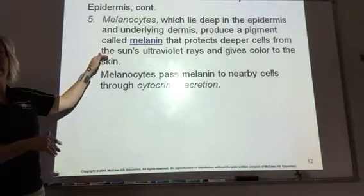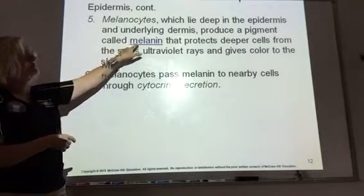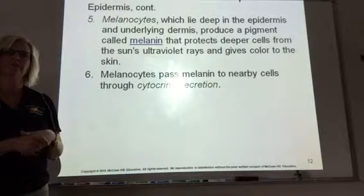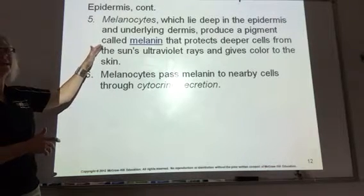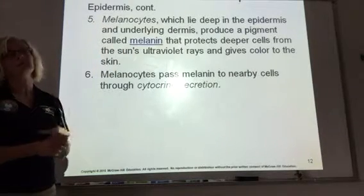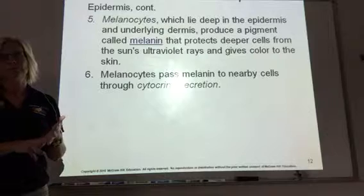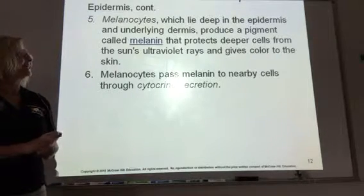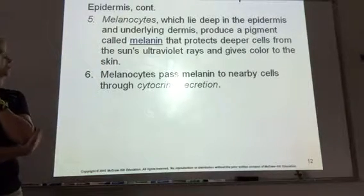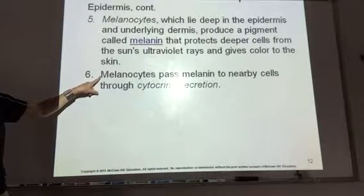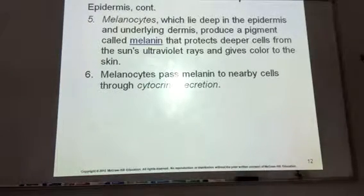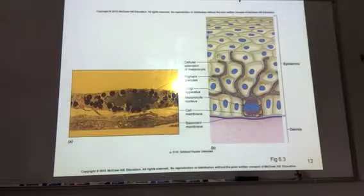When you get a tan, that means your body is producing more melanin — that's basically a protective defense your body mounts. The more melanin you have, the more protected you are. Lighter-skinned people have less melanin, so their skin is not as protected; they're going to burn and have a higher risk of skin cancer. Melanocytes pass melanin to other cells through cytokine secretion — the melanin transfers and spreads throughout your cells.